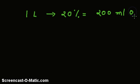So here we go. In one liter, we get 20%, that is equal to 200 ml oxygen. Therefore, in two liters, we would get 400 ml of oxygen.